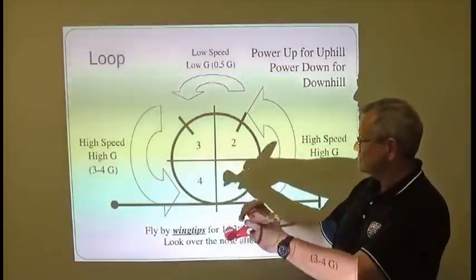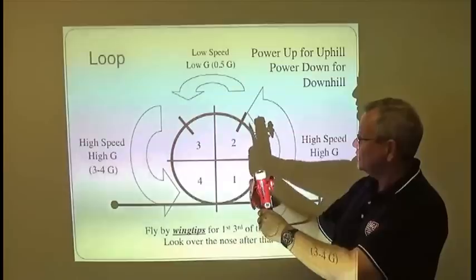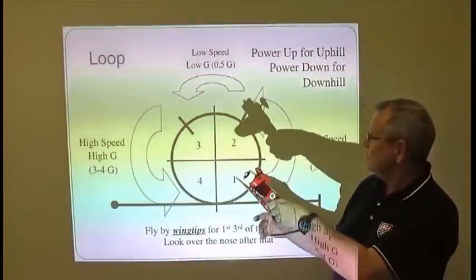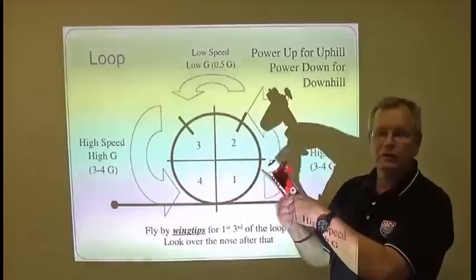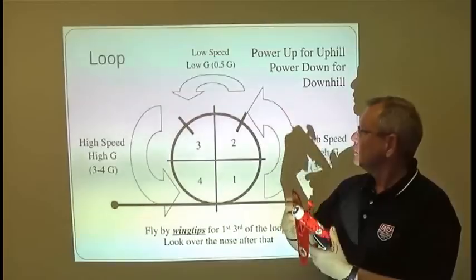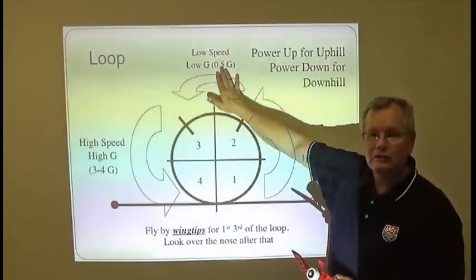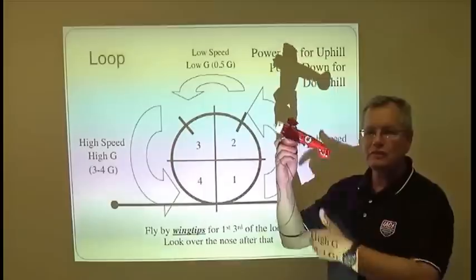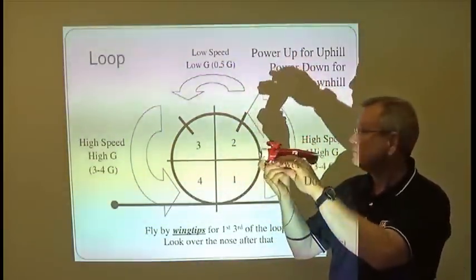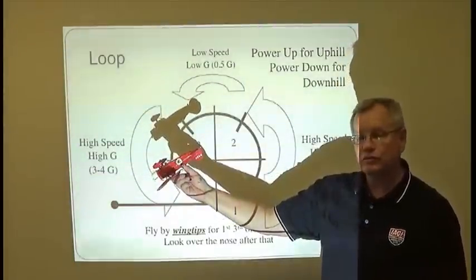As you pull into this and you're pulling three to four Gs here, you need to keep rounding this loop out until about the middle of quarter number two. Now here is where you're going to start easing off the stick and trying to float over the top. You still want to maintain probably about half a G of positive G, so even though you feel light in the seat as you're going over the top, the blood is still going to your feet, not to your head. You're going to float that all the way over here until about the middle of quarter number three.